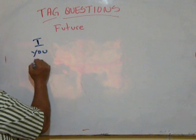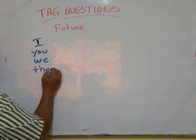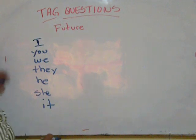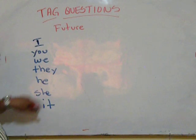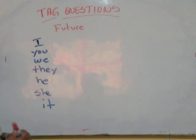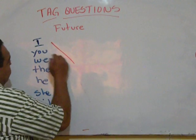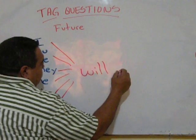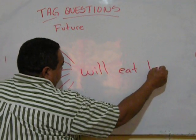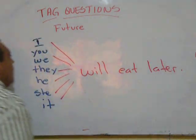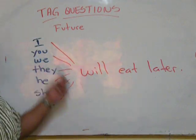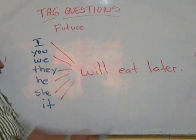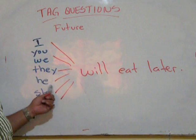I, you, we, they, he, she, it. The 7 pronouns people use will for the future. So, I will eat later, you will eat later, we will eat later, same thing as she will eat later, or he will eat later.